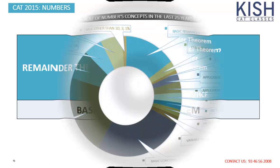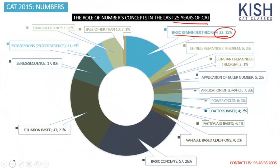Let's have a look at the remainder theorems' weightages in CAT. I've taken the last 25 years of CAT — from 1990 to 2014. Our current topic, basic remainder theorem, has 33 questions and 15% weightage — that's very very high. For the remaining topics like Chinese remainder theorem or constant remainder theorem, the weightage is very very low when compared to basic remainder theorem.